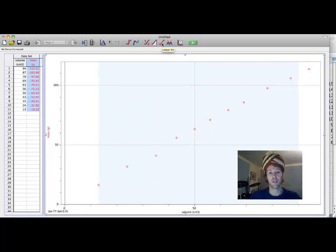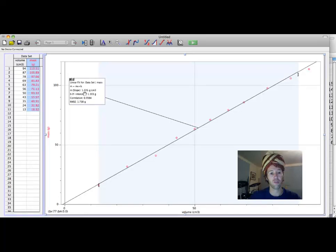Then you go up this button here, and you put a linear fit trendline. Boom. It's that easy. It tells the slope. It's 1.3 grams per cubic centimeter. That's the density of the cheese I was working with.